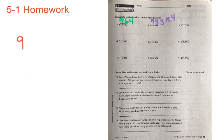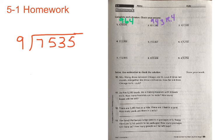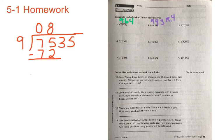We have a divisor of 9 going into the dividend 7,535 — so 7,535 divided by 9. How many times can 9 go into 7? Zero, because 9 is larger than 7. How many times can 9 go into 75? Eight times, because 9 times 8 is equal to 72. We line it up and subtract: 5 minus 2 is 3, and 7 minus 7 is 0. Check: 3 is less than our divisor of 9 — we're good to go.